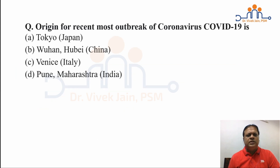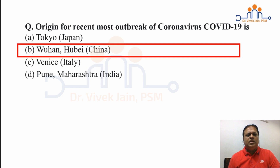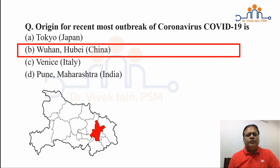Second question: what was the origin for the most recent outbreak of COVID-19 disease? Was it Tokyo in Japan, Wuhan in China, Venice in Italy, or Pune in Maharashtra? It was Wuhan in Hubei province of China. From Wuhan, on 12th of December 2019, the first case was reported, and by the end of December it grew to a large number of cases subsequently reported to the WHO China office as pneumonia of unknown etiology.